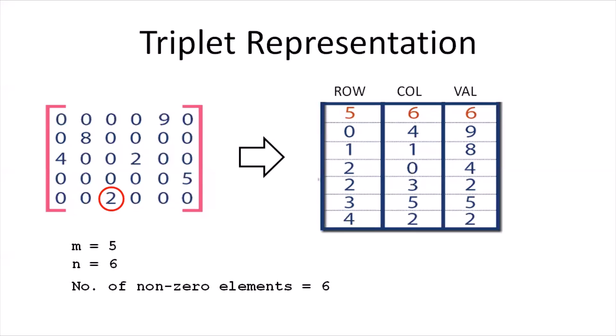Note that the triplet representation has NNZ plus one number of rows, where NNZ represents the total number of non-zero elements inside the array.